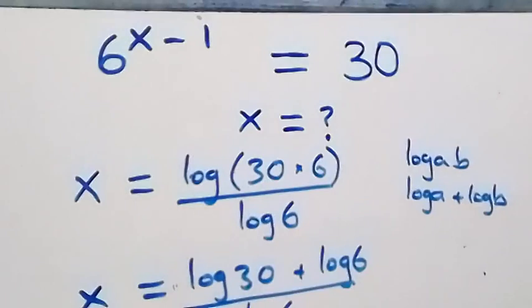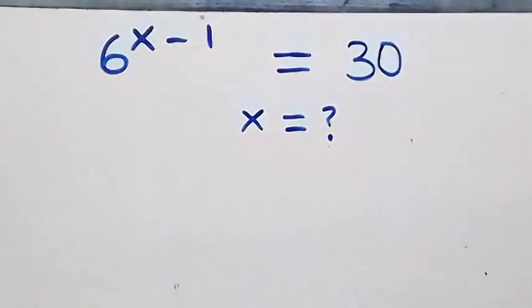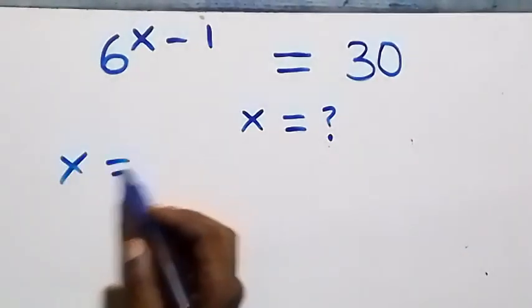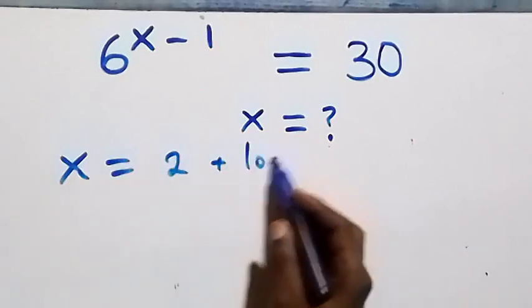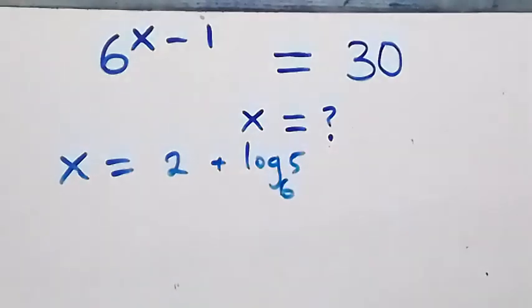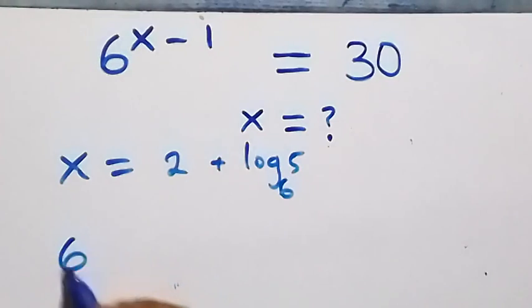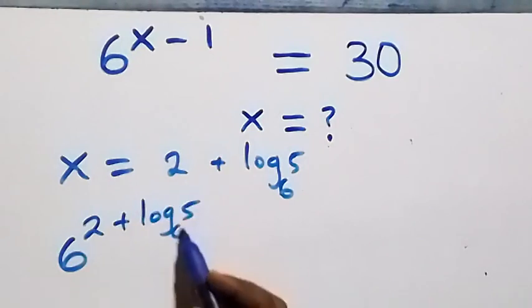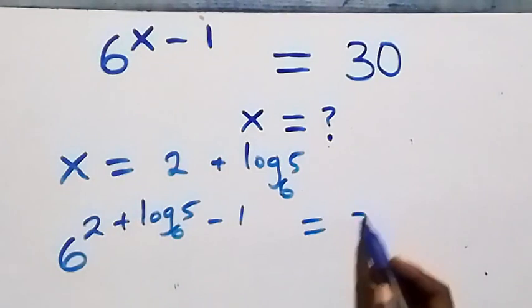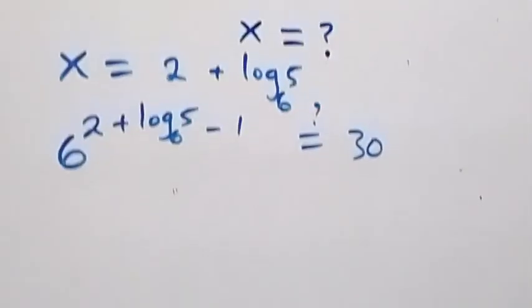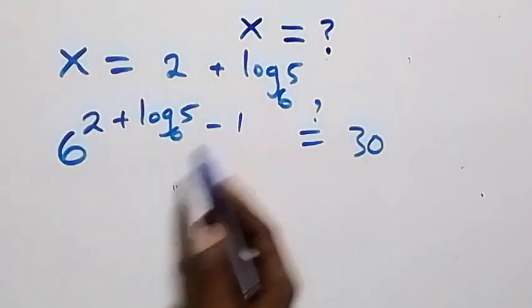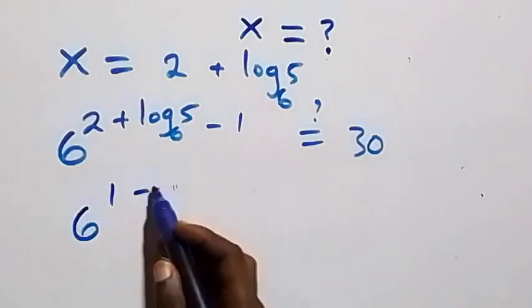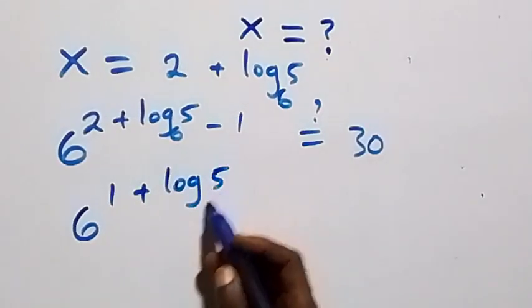Let's check if this satisfies the given problem. We substitute the value x equals 2 plus log₆5 back in. What we have becomes 6 raised to the power (2 plus log₆5) minus 1, equal to 30 on this side. From here we have 2 minus 1, that's 1. So this is 6 raised to power 1 times 6 raised to power log₆5.